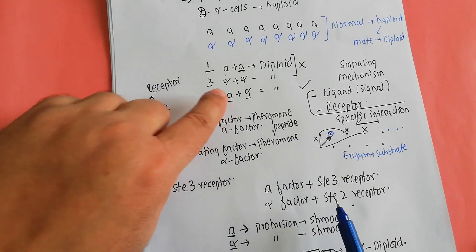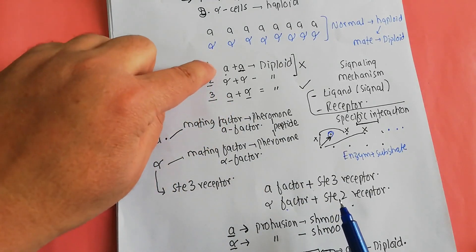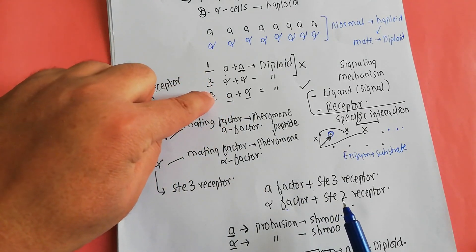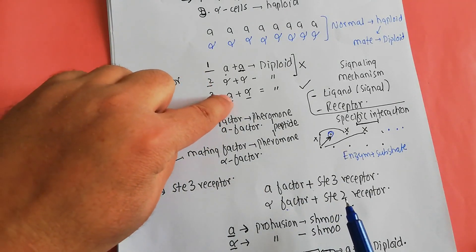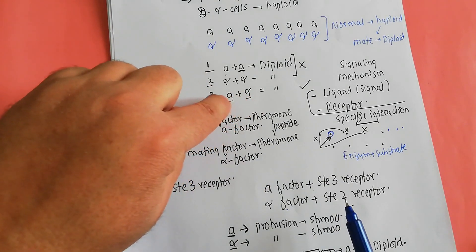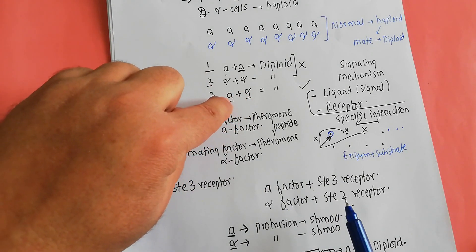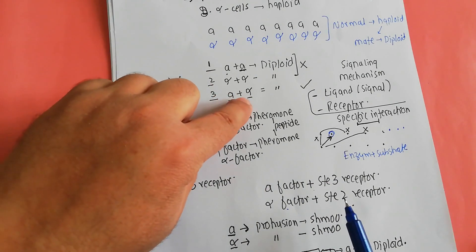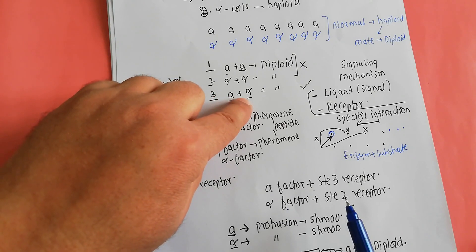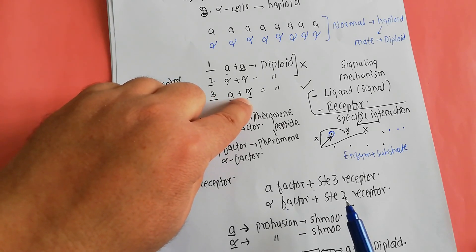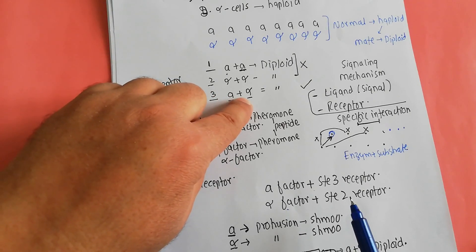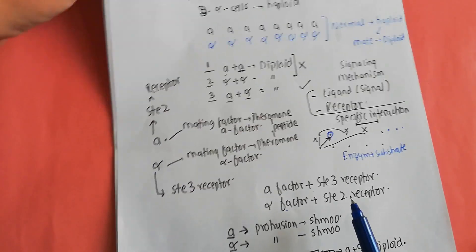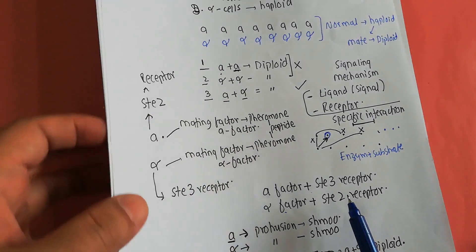That is the reason that out of the three possibilities, only the interaction of the haploid A cell and the haploid alpha cell occurs. They combine with each other during normal conditions to give rise to diploid cells.